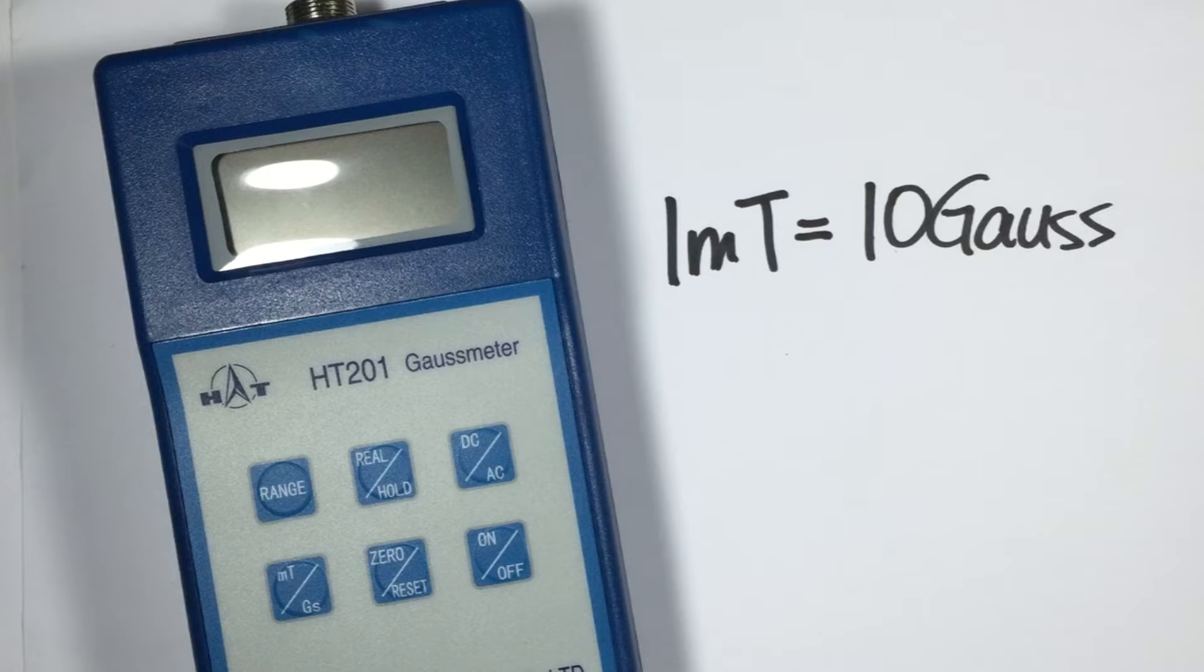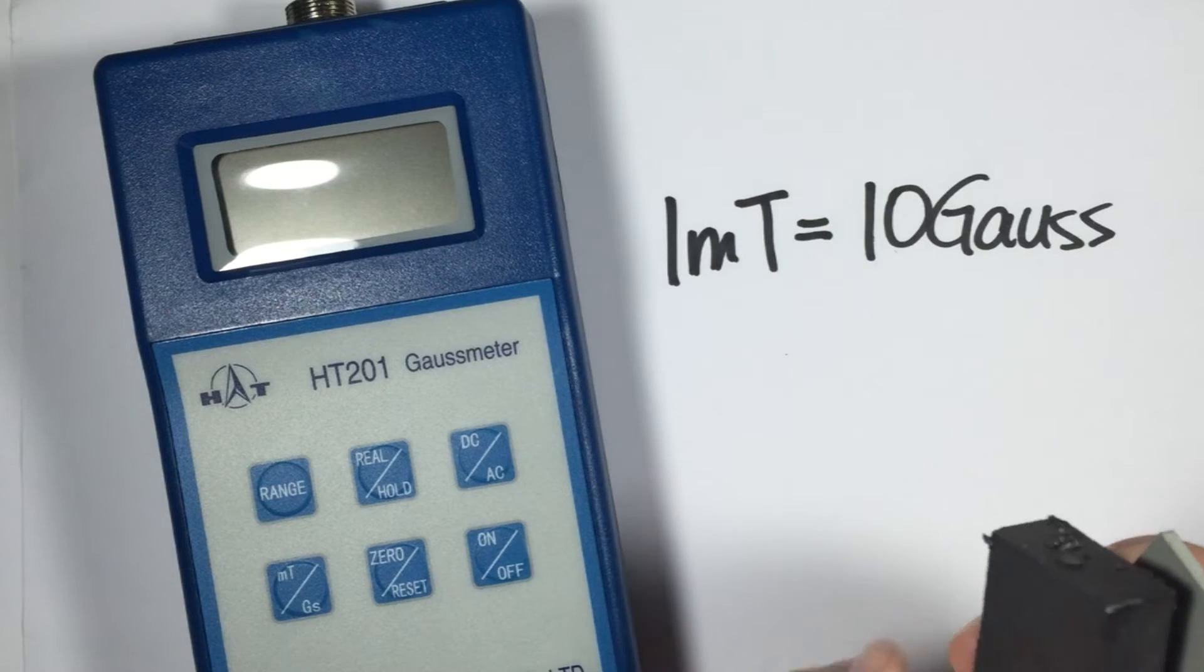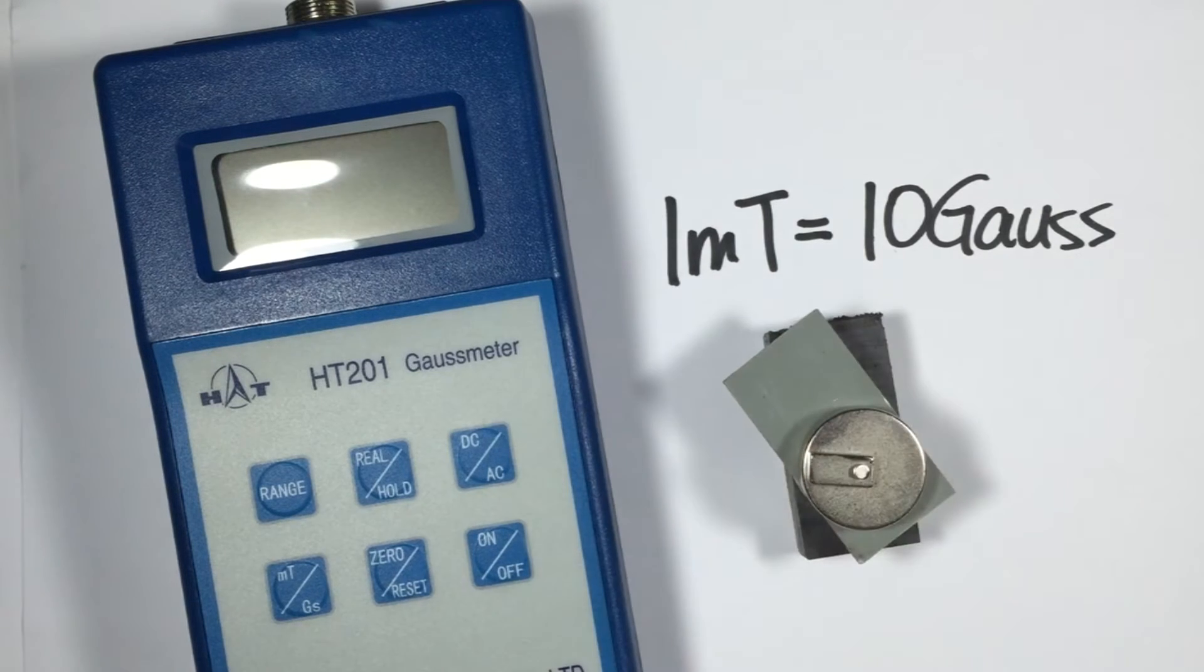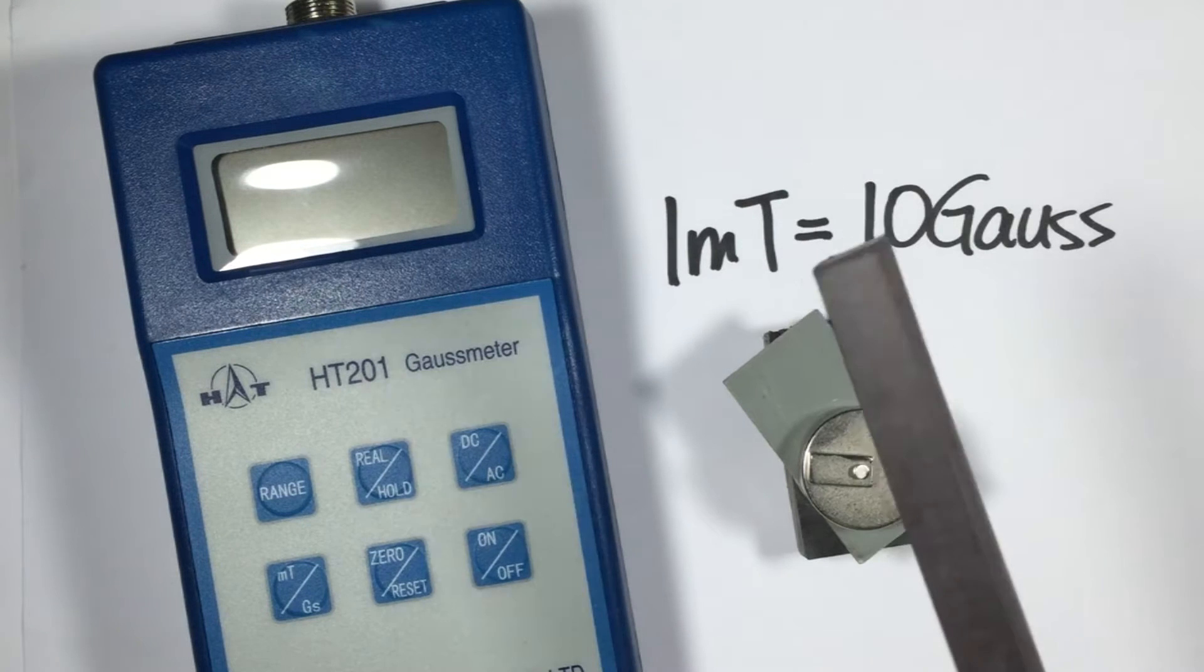So I have here different types of magnets. We have neodymium magnets, ferrite magnets, and a very strong rubber magnet.